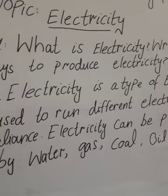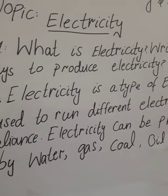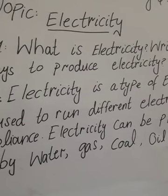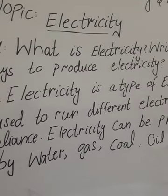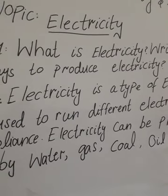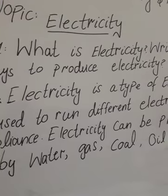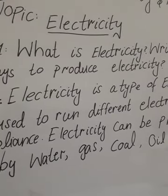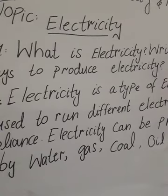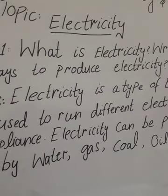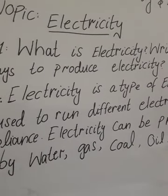Current electricity is a charge that is flowing from one place to another. For example, when you attach a switch with an electric socket at home, you start using current electricity — the current is moving from one point to the other. That is what we call current electricity, in which the current is flowing from one place to another.